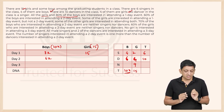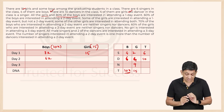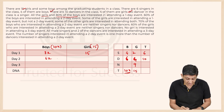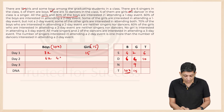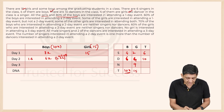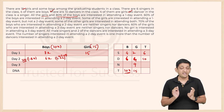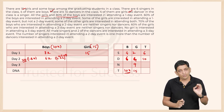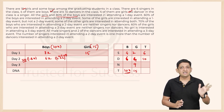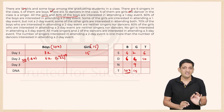70 percent of the boys interested in the two-day event are neither singers nor dancers. So 70 percent of 6x equals 4.2x people are neither singers nor dancers. This means 1.8x people among those 6x boys interested in the two-day event are either singers or dancers. This value of 1.8x is key to cracking the set.